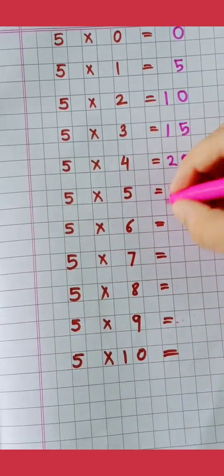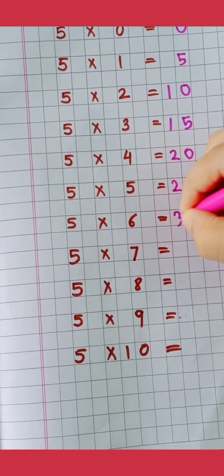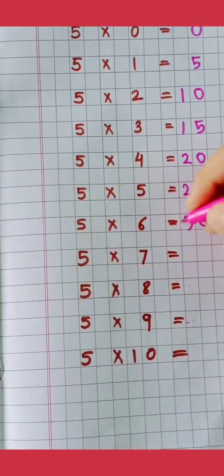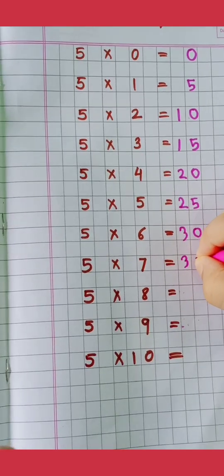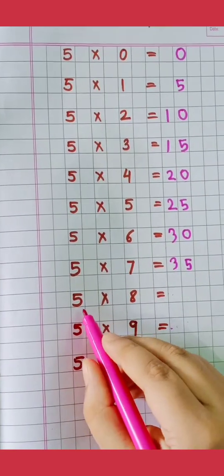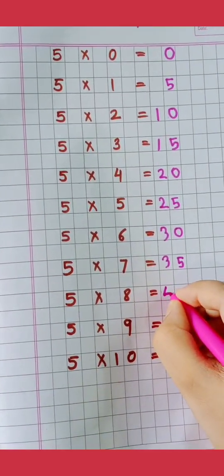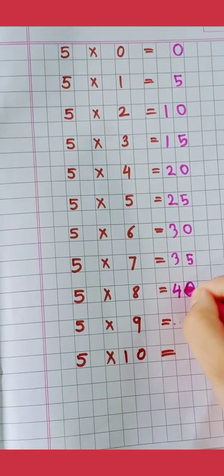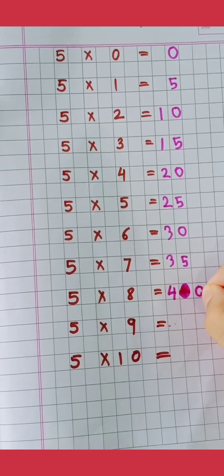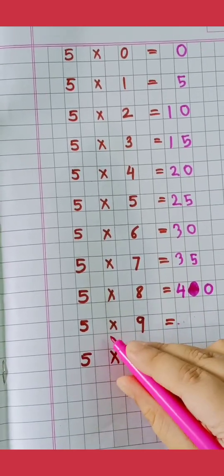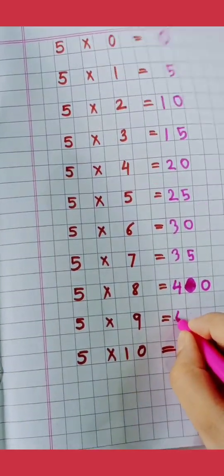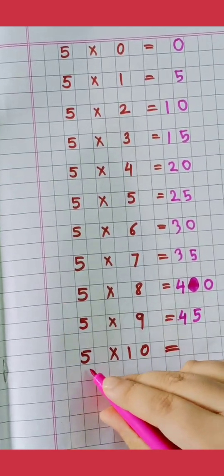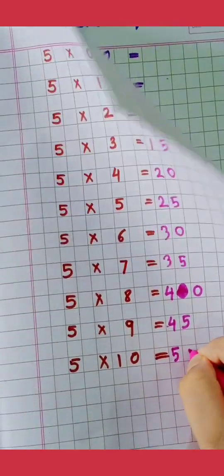5 5's are 25, 5 6's are 30, 5 7's are 35, 5 8's are 40, 5 9's are 45, 5 10's are 50.